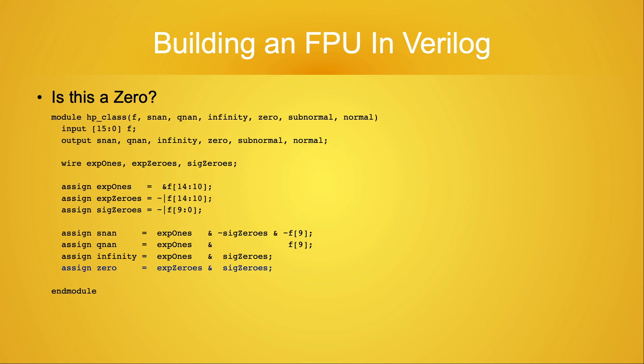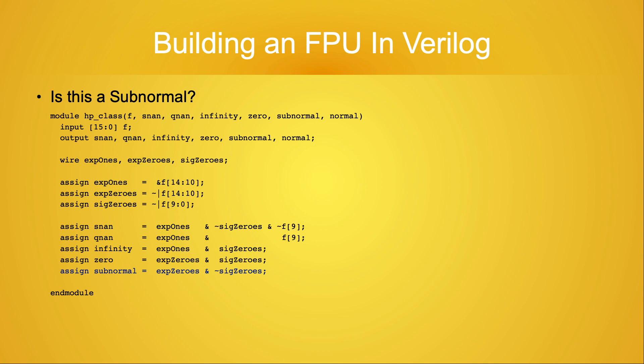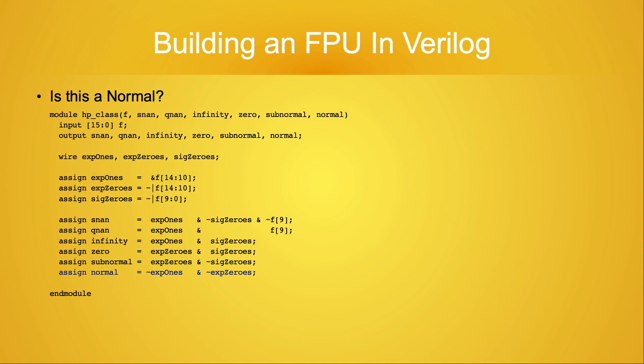For the two cases when the exponent bits are all cleared to zero, we first compute the zero flag using this equation. And we can compute the subnormal flag by changing the logic to be true if at least some of the bits of the significant are set to 1. At this point we have identified all of the oddball values. The only thing left is to compute if we have a normal number — that is, if the exponent field doesn't have all of its bits set to 1 and if it doesn't have all of its bits cleared to zero, it's a normal number. That completes the code for categorizing 16-bit floating point values.